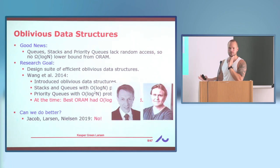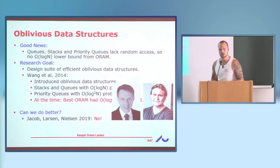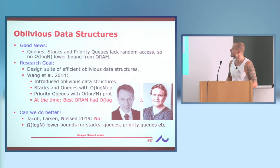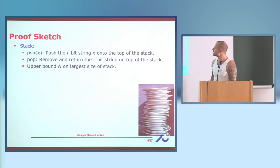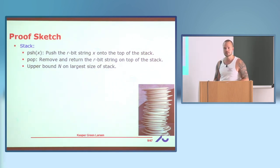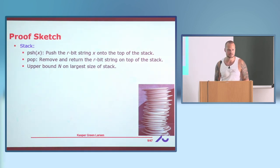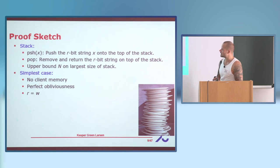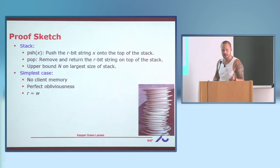The question is whether we can do better, and unfortunately the answer is no — which is something we showed at SODA this year together with Jesper and Rico. We get a log N lower bound for stacks, queues, priority queues, search trees, and so on. A stack is a data structure where you can push an R-bit string on top and pop — remove the top element. In this oblivious setting we're given an upper bound in advance on the largest size the stack can have. I'll give the proof assuming no client memory and perfect obliviousness, where the number of bits in one stack element matches the block size.